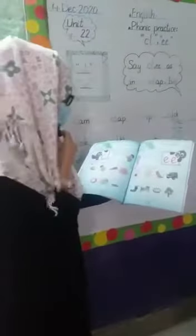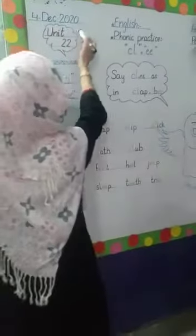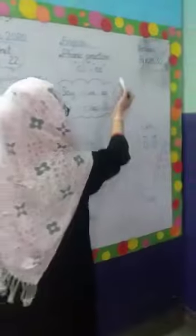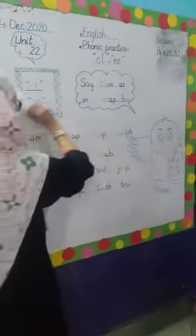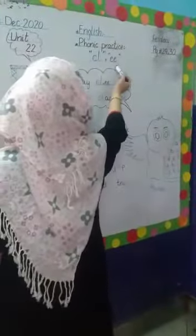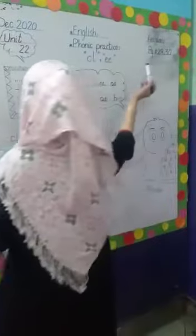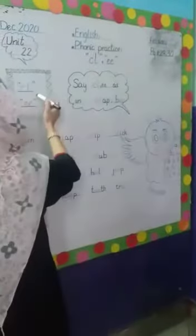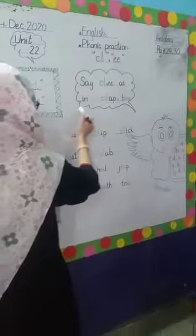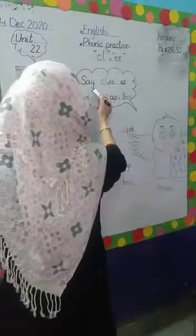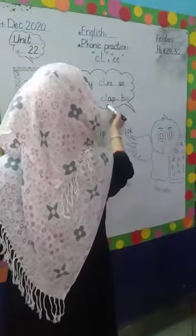We discuss on board. Firstly we mentioned the date — summer 2020. Subject is English. Unit number 22 for the practice, C-L-E. Case number 29 plus 30, C-A-C-L-E. Say C-L-E as in Clack.